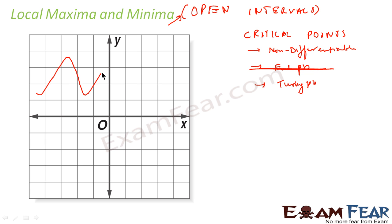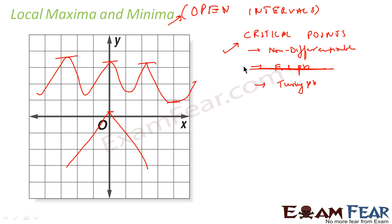Since there is no question of endpoints, the critical points here can be either turning points or non-differentiable points. For example, a function can have local maximum at a turning point, or if the function is like f(x) = |x|, the function is non-differentiable at that point and can have maxima or minima there. So local maxima and minima can happen at two types of points: non-differentiable points or turning points, because we are talking about open intervals.